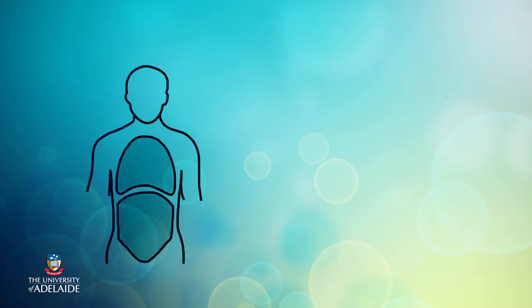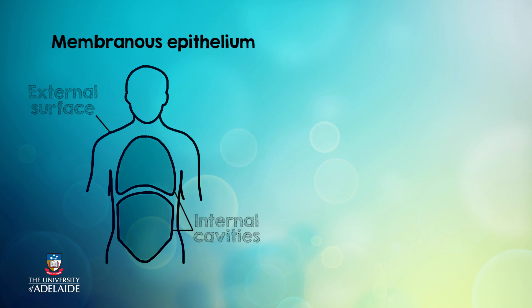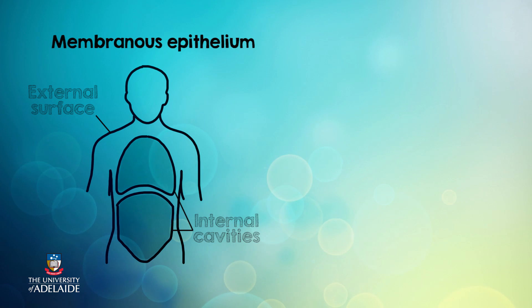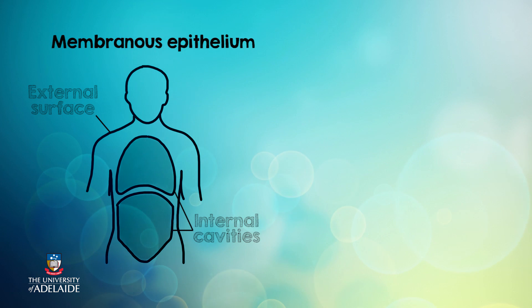We can divide epithelial tissue into two types: membranous epithelium and glandular epithelium. Membranous epithelium covers and lines the external surface of our body, as well as lining all internal cavities, organs, tubes and passageways.